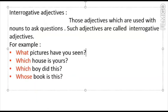'What pictures have you seen?' Pictures is the noun here, and we are asking what pictures — so what is the interrogative adjective. 'Which house is yours?' House is the noun and we are asking which house, so which is the interrogative adjective. 'Which boy did this?' Boy is the noun and we are asking which boy, so which is again the interrogative adjective.